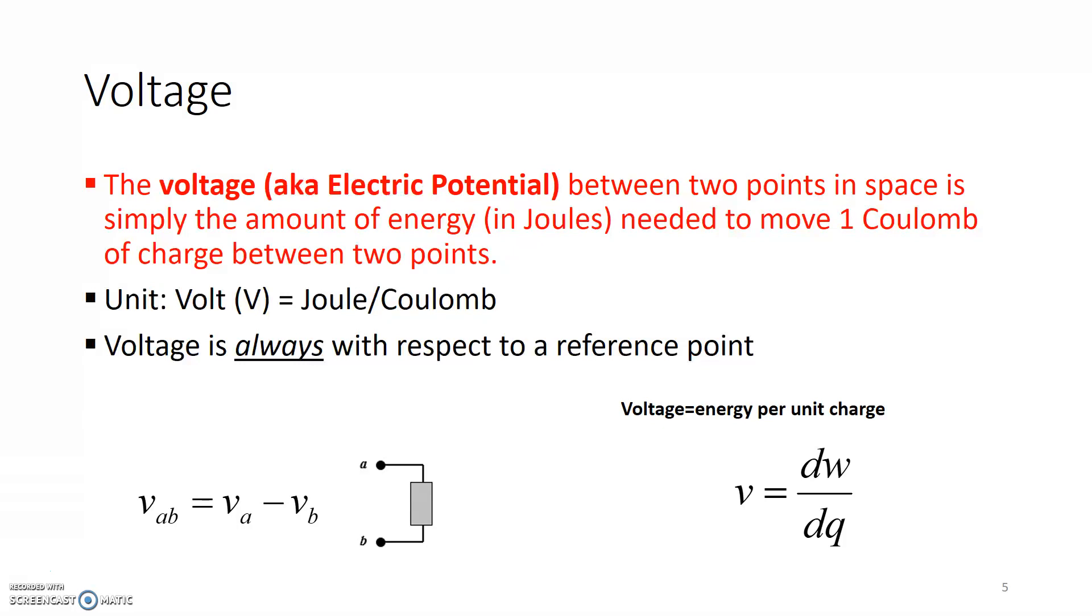Whenever we calculate voltage, since it is the amount of energy that's needed to move a charge from point A to B, voltage is always written with respect to a particular reference point. So for example, in this particular example, we have nodes A and B. A is at a particular potential, and B is at another potential, and the voltage is considered to be the difference between these potentials. So we write this as V subscript AB, which means VA minus VB.